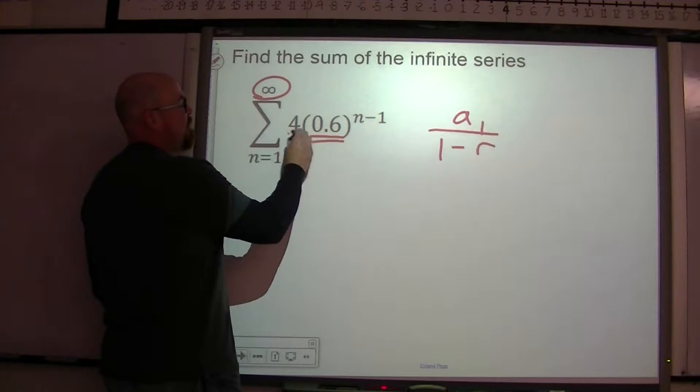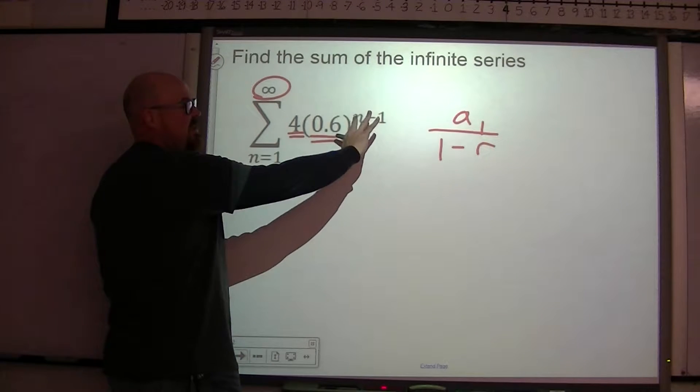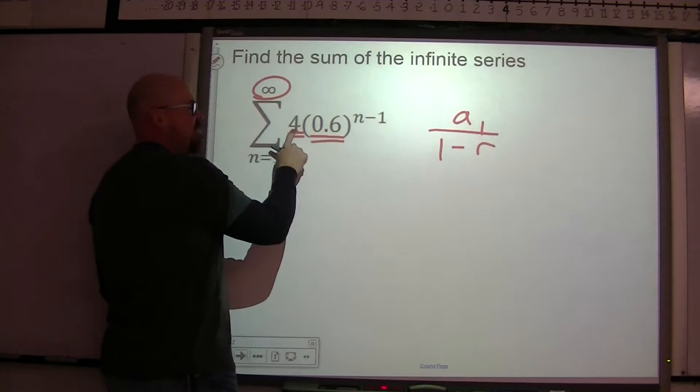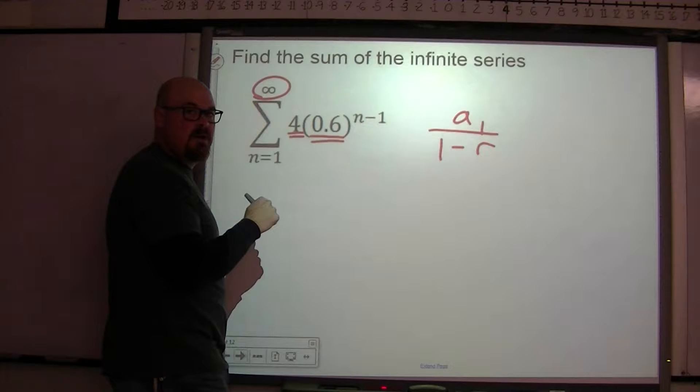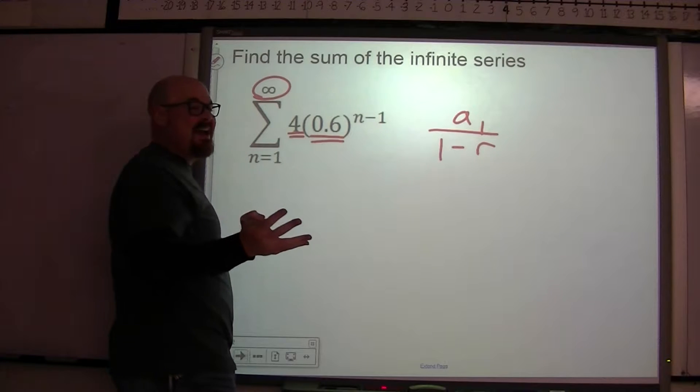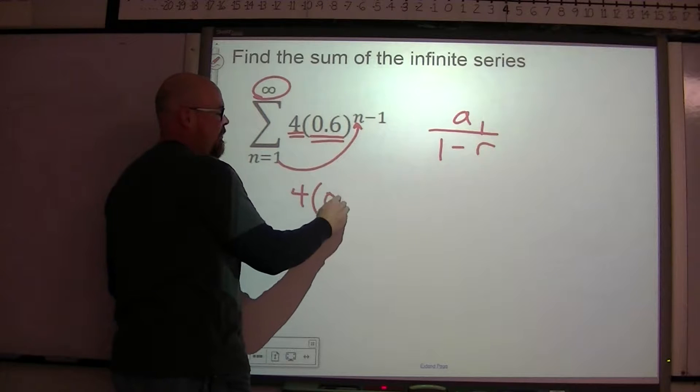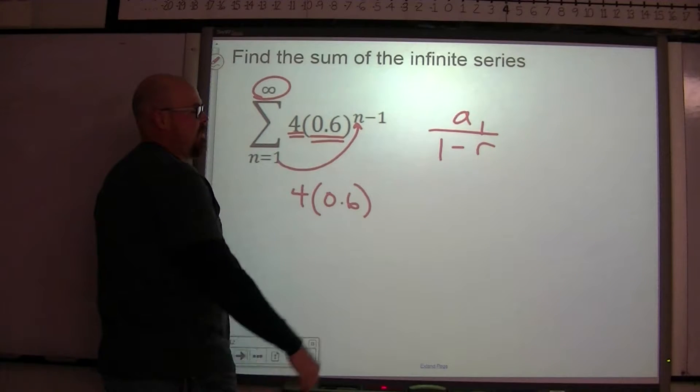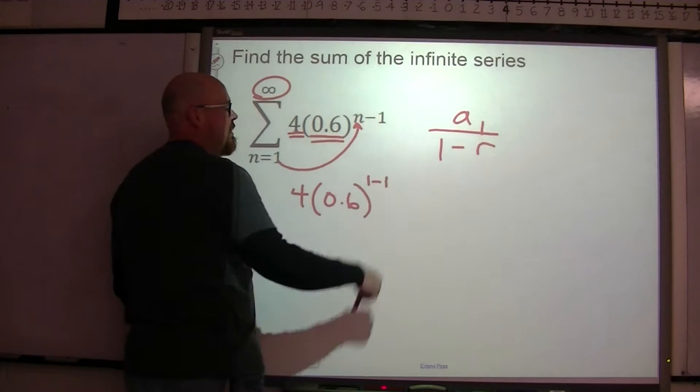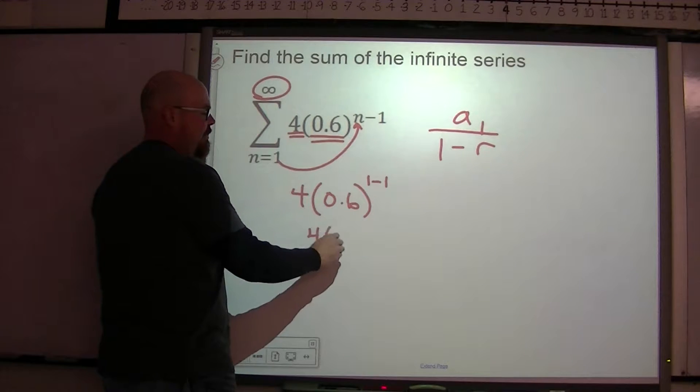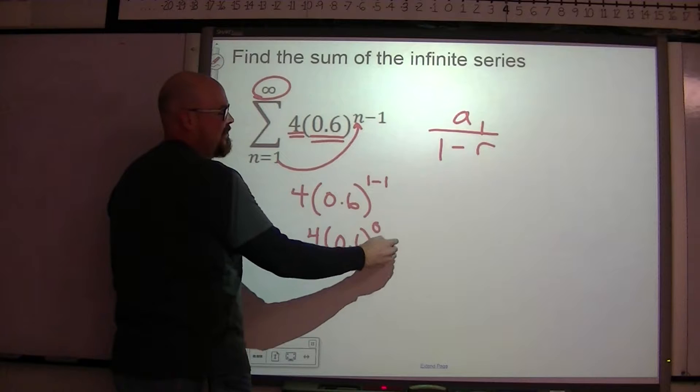And again, the first term, when a geometric sequence is written in this format where the power is n minus 1, the first term is this number. But if you forget that, you can always just take the number 1 and plug it in here. So we have 4 times 0.6 to the 1 minus 1 power. This is 0. So we have 4 times 0.6 to the 0 power.